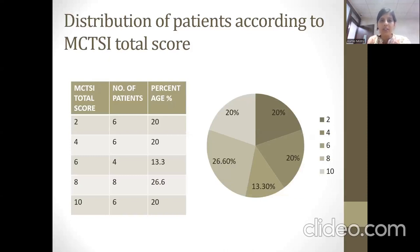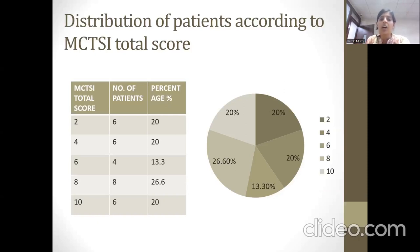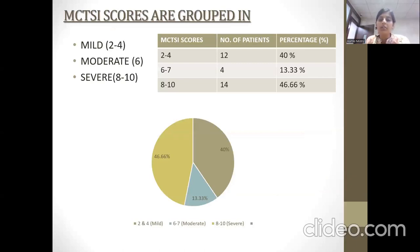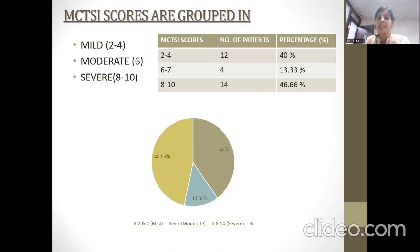Distribution of patients according to the Modified CT Severity Score: about 20% of patients were seen at score 2, 20% at score 4, 13.3% at score 6, 26.6% at score 8, and 20% at score 10. The scores are divided into three groups — mild (grade 2 to 4), moderate (grade 6), and severe (grade 8 to 10) — from which 40% of cases were mild, 13.3% moderate, and 46.6% severe.